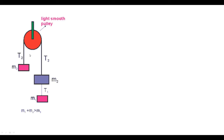So the pulley does not rotate; the string simply slides over the pulley as the blocks move, without any rotation of the pulley. Since m1 plus m2 is greater than m3, the right side is heavier, so the blocks on the right side will accelerate downward, and the block on the left side of the pulley will move upward.